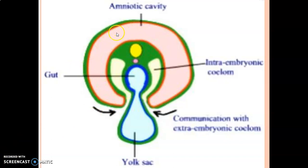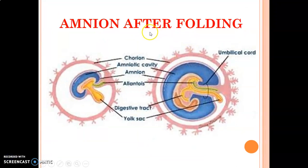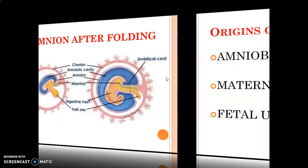After the folding of the embryo, the amniotic cavity spreads around the embryo — it comes all round except at the place where the umbilical cord is. So that is your amniotic cavity lined by the amnion.